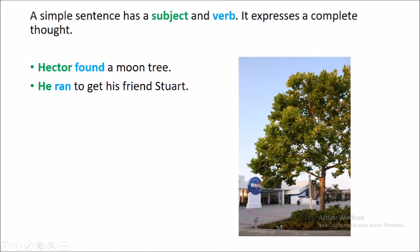A simple sentence has a subject and a verb. It expresses a complete thought. Here is an example: Hector found a moon tree. Another sentence would be, he ran to get his friend Stuart.